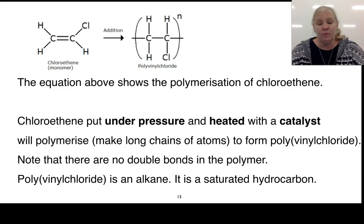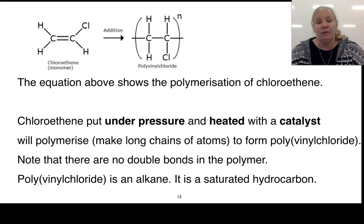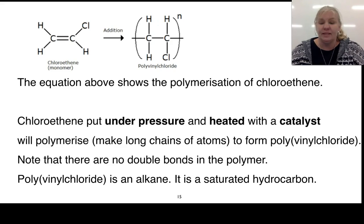Here's the second example: chloroethene. Again, we have our double bond. Through the addition polymerisation process, we end up with polyvinyl chloride — again, no double bonds in the final product. The double bond has been broken and we end up with polyvinyl chloride. We need pressure, heat, and a catalyst for this to occur, and no double bonds remain in the polymer — it is an alkane.